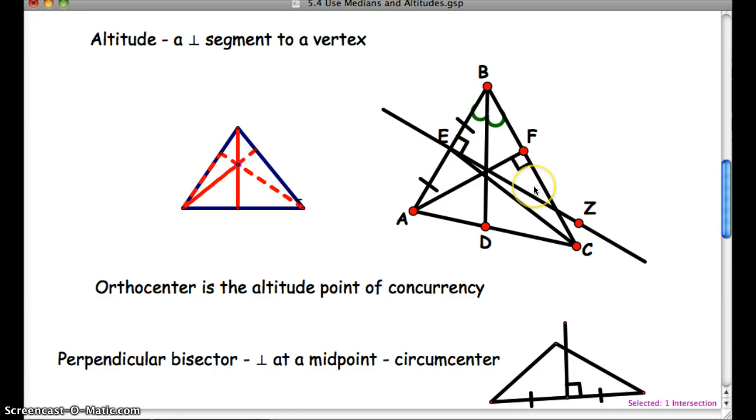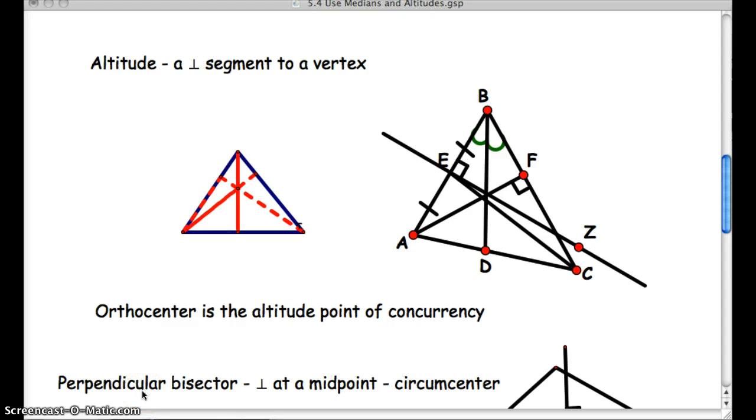What about a perpendicular bisector? Which one is a perpendicular bisector? How about EZ here? EZ bisects BA into two congruent segments. And there's your 90 degree angle.